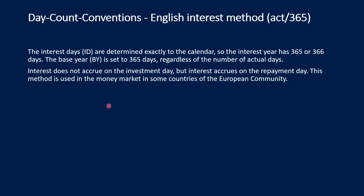The English interest method, Actual/365, is shown next. The interest days are determined exactly by the calendar — that is why it is called 'actual' — so the interest year has 365 or 366 days. The base year, the denominator, is always set to 365 days regardless of the actual number of days — just a small change from the Euro interest method. Interest does not accrue on the investment day, but accrues on the repayment day. This method is used in the money market in some EU countries, most notably Great Britain.